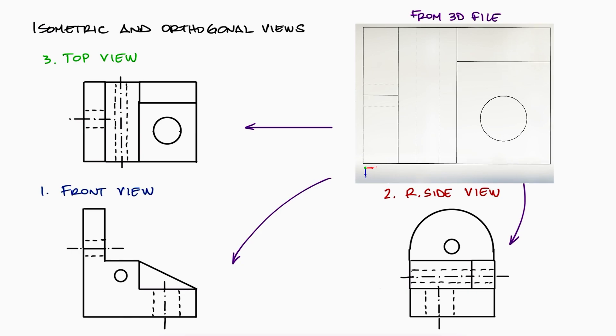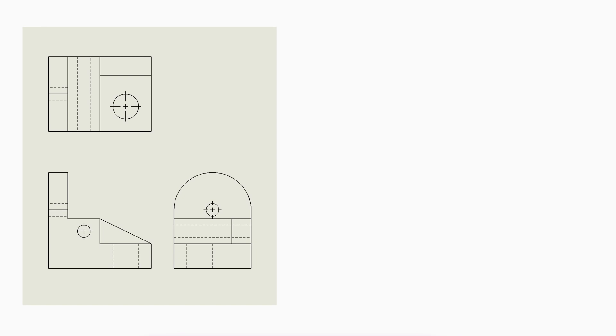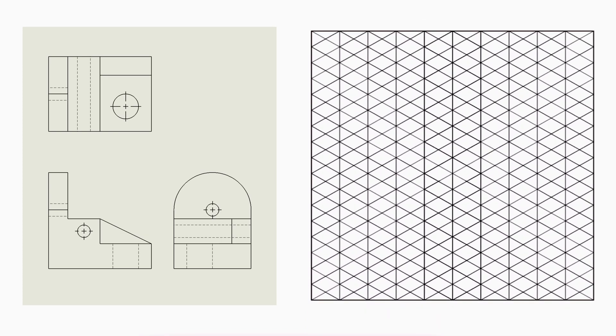Now, the opposite process is also very important. Let's say you already have the part drawings, and you're trying to sketch the isometric view to have a better idea of what your part would look like in real life. In that old age, they used to use a thing called isometric grid paper.